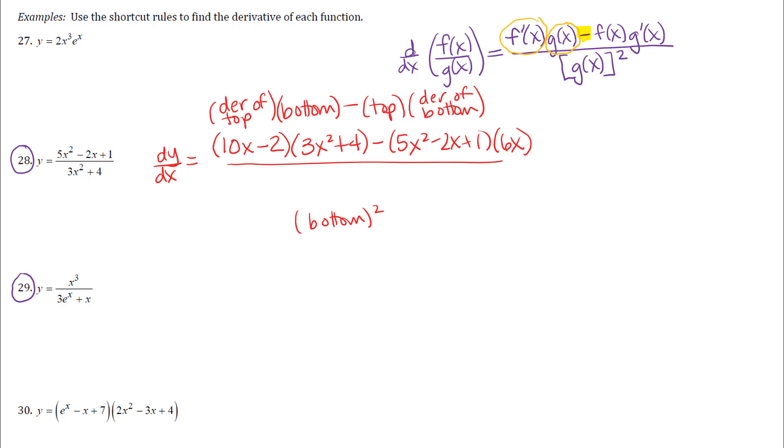And then I have all of that over the bottom, the original denominator squared. It's perfectly fine to leave your answer like this unless you need it simplified. If you do need it simplified, be careful about how you do that. One common mistake that I see students make is that they will identify some factors that match, for example in this one 3x squared plus 4 in the numerator and a 3x squared plus 4 in the denominator and try to cancel those.